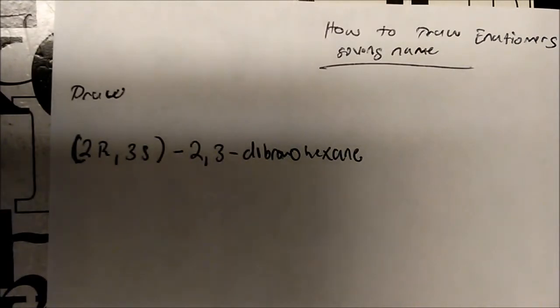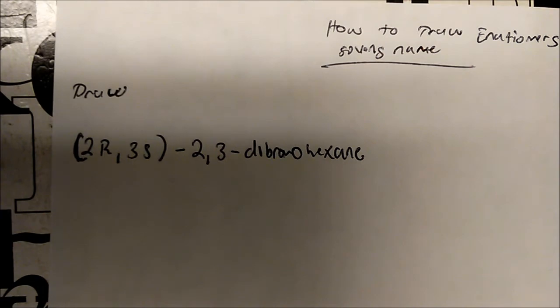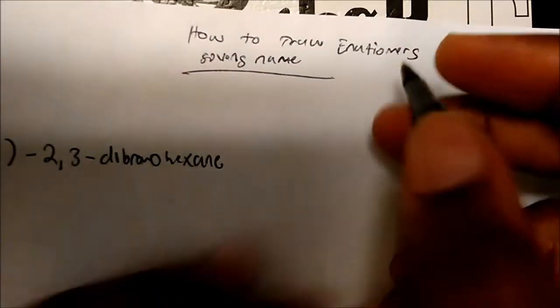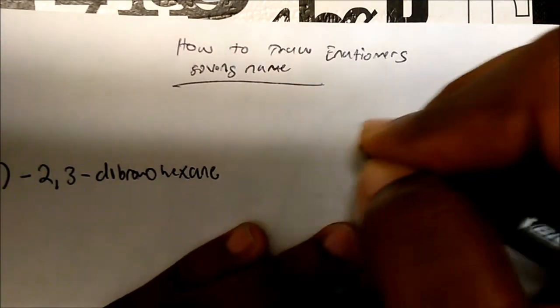So how will you draw enantiomers given their IUPAC names? Well, the first thing I like to do is draw the structure without any stereochemistry at all. So I'm going to draw 2,3-dibromohexane. Starting with the parent chain, we know hexane looks something like this.